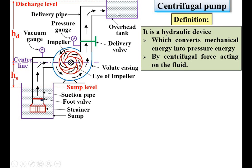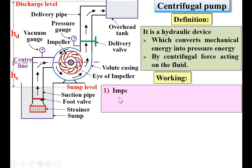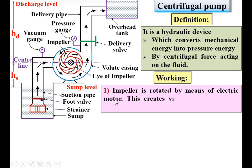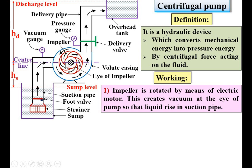The question is how it works. The next point is working. The impeller is rotated by means of the electric motor. This creates a vacuum at the eye of the pump so that liquid rises in the suction pipe. The impeller rotation creates a vacuum at the center of the impeller, while the liquid is at atmospheric pressure at the sump. Due to that pressure difference, liquid rises in the suction pipe.